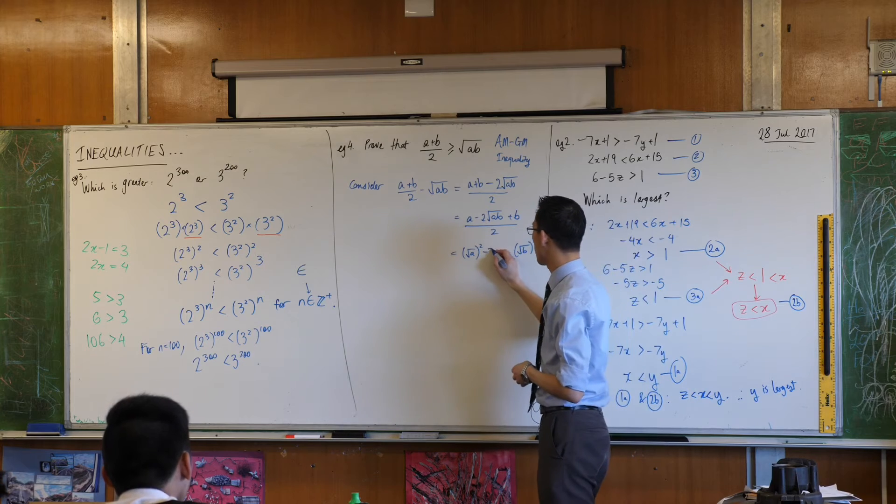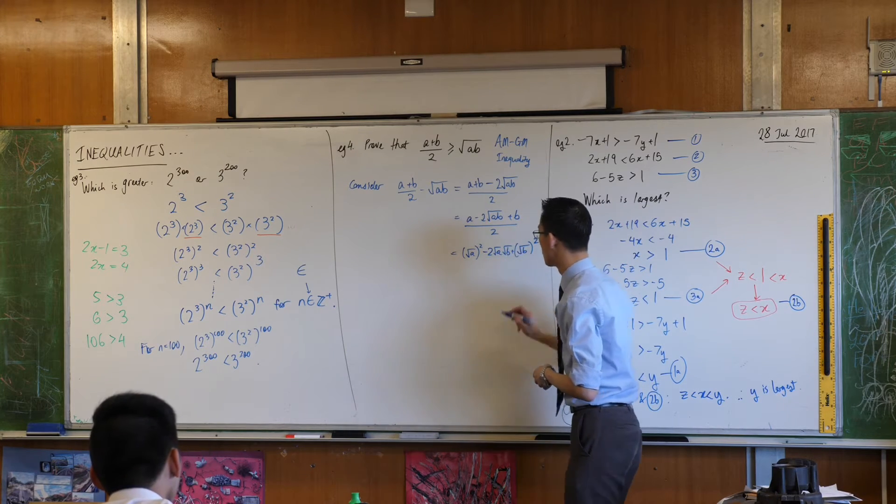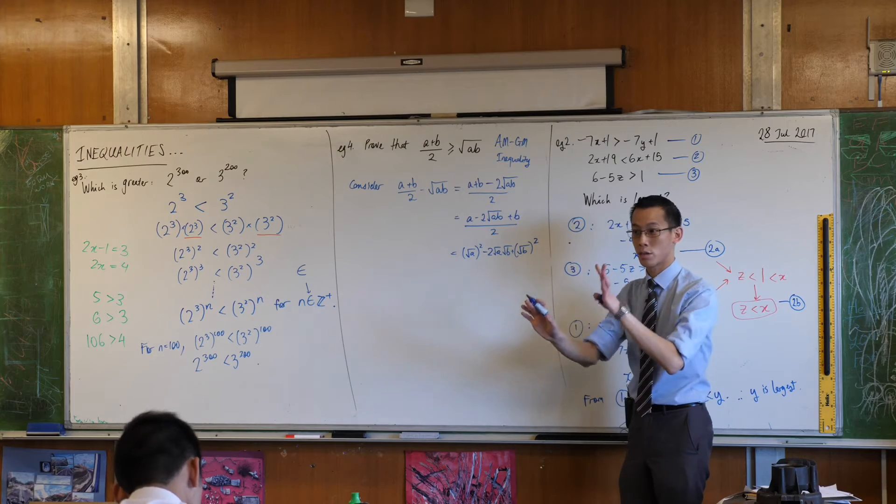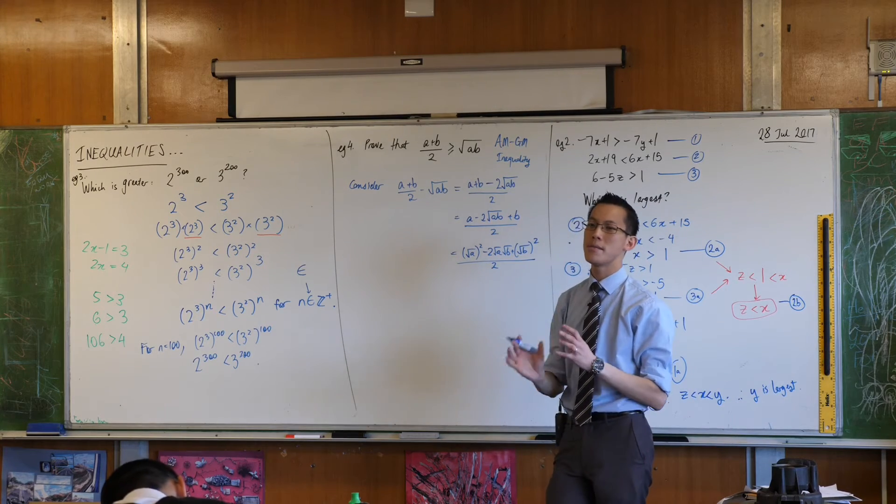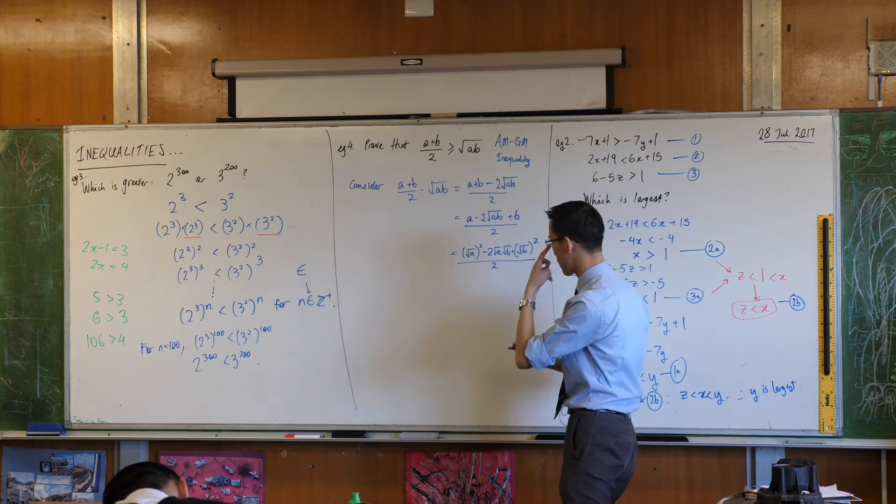So this in fact is two lots of √a, √b. That's all divided by 2. Now maybe it's a little clearer that this is a perfect square. What's going to be in the brackets?